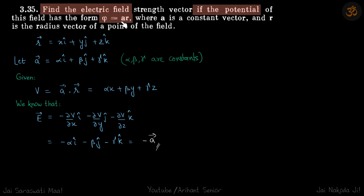So, we are given a potential as a function of a dot r. This is a vector dot r vector. And we need to find the electric field in the region.